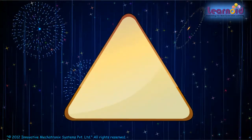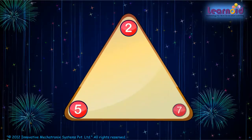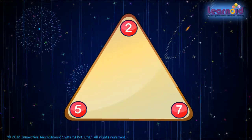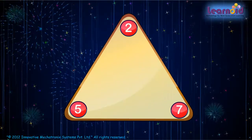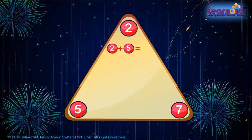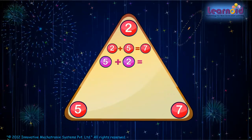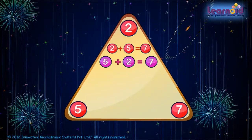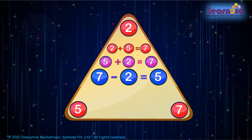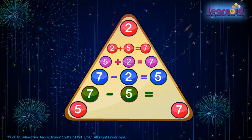Let's see one more number family. The numbers of the family are 2, 5 and 7. 2 plus 5 is 7. 5 plus 2 is 7. 7 minus 2 is 5. 7 minus 5 is 2.